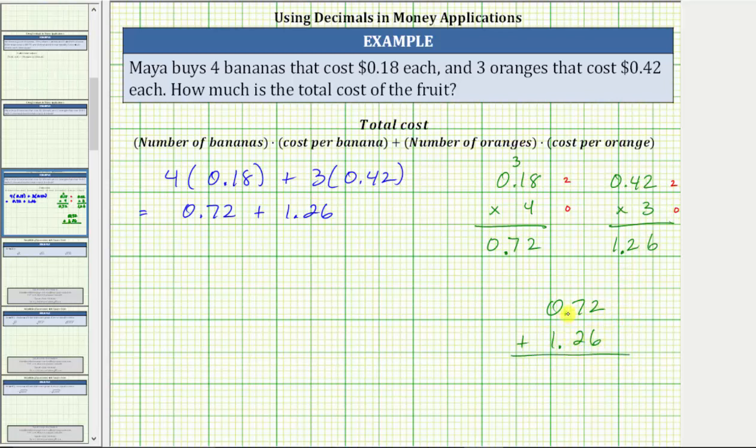Before determining the sum, we bring the decimal down and now add like we normally do. Two plus six is eight, seven plus two is nine, zero plus one is one. The sum is 1.98, which means the total cost of the fruit is $1.98.